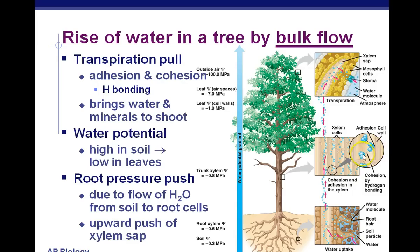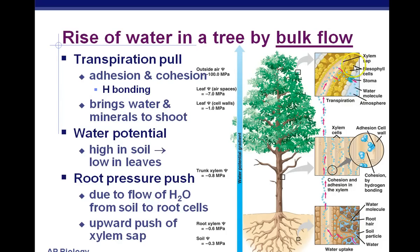Water-to-water cohesion prevents the water from falling back down. Water-to-xylem adhesion keeps pulling water molecules up and up, just like water creeping up a paper towel, until it reaches the leaf. At the leaf, water moves from high to low water potential, evaporating into the spongy mesophyll space, and then eventually evaporating out into the atmosphere.